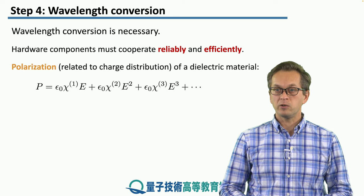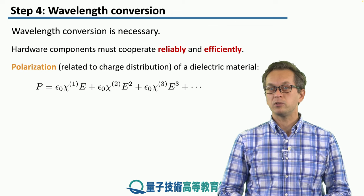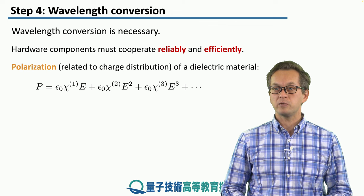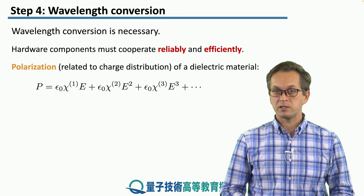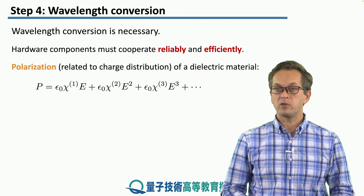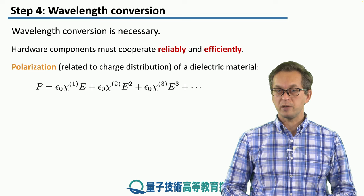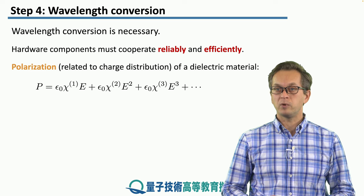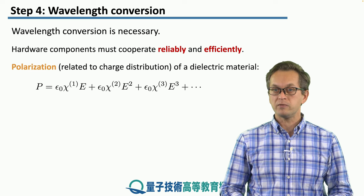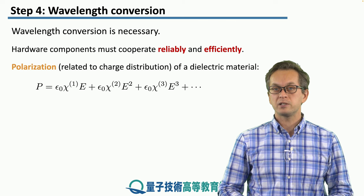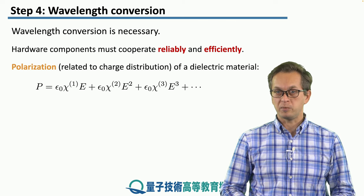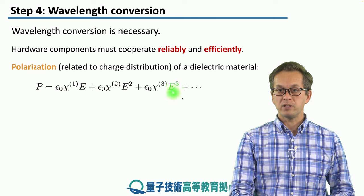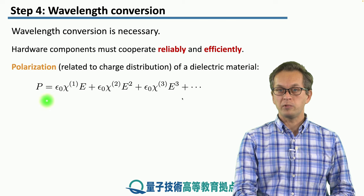In order to see how wavelength conversion works, we're going to have to look at something known as polarization of a dielectric material. Now, this polarization is different from what we saw in the previous steps, where we talked about polarization of electromagnetic waves or polarization of photons. Here, polarization refers to the charge distribution in the dielectric material, and it is given by this formula.